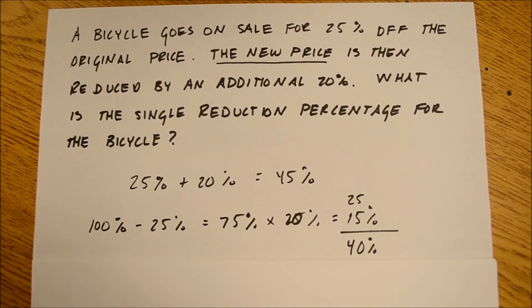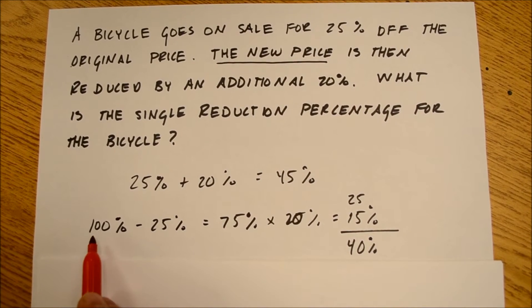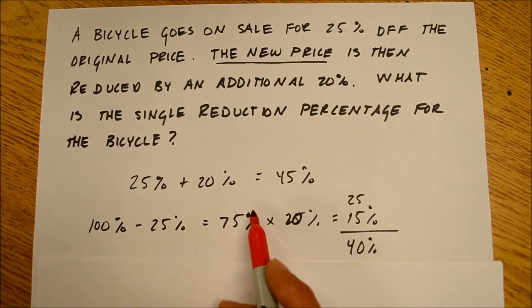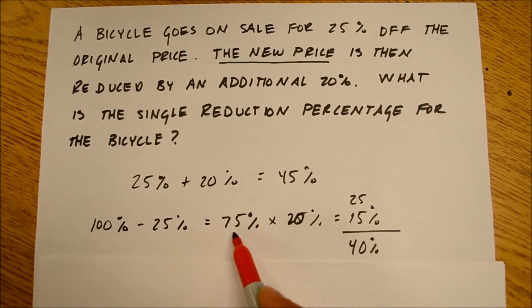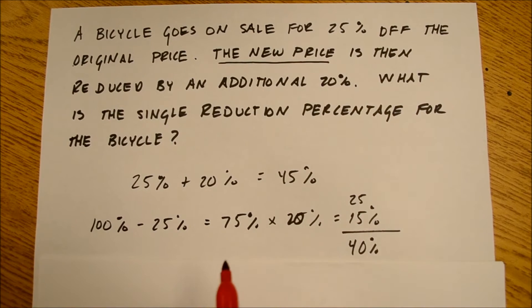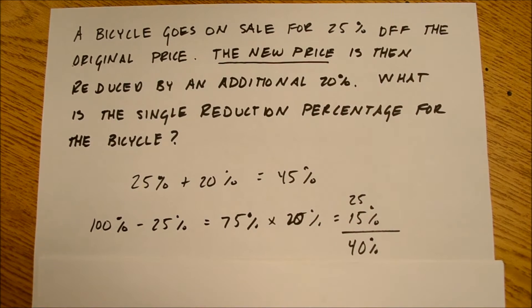What I did is I explained this concept. 100% minus 25% is 75%, and the kids came up with that 75%. And then the question was, how do I take 20% of 75%? That was a sticking point.